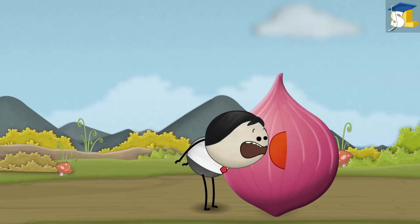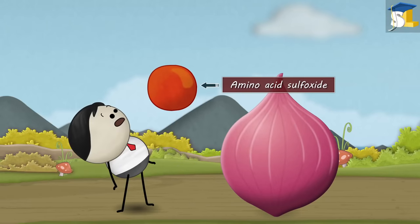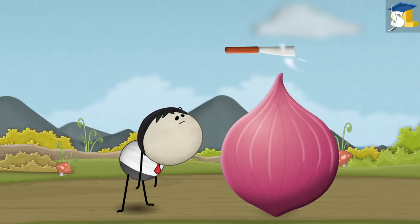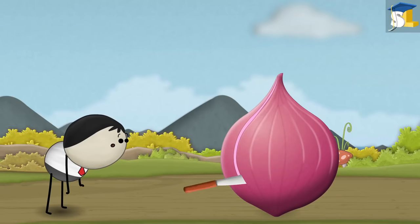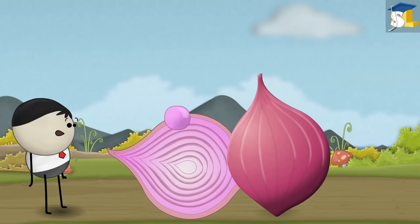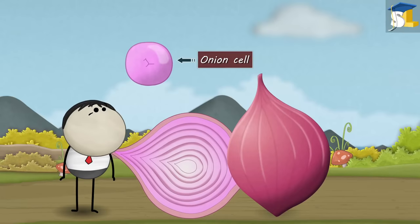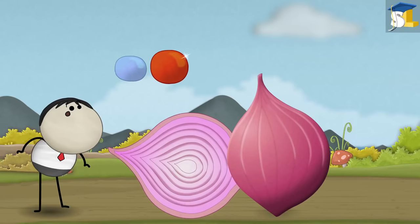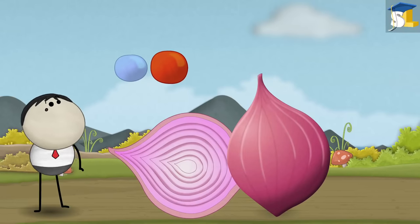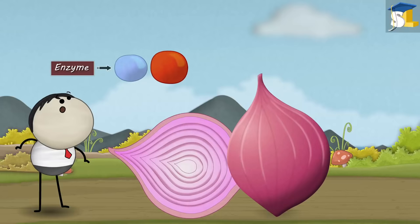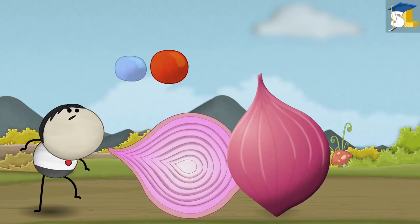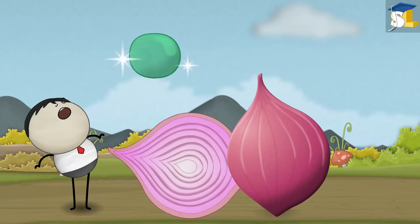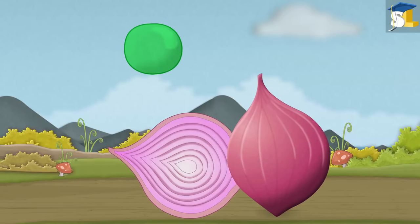Onions consist of amino acid sulfoxides. When we cut an onion, millions of onion cells rupture, releasing the amino acid sulfoxides along with some special enzymes. These special enzymes react with amino acid sulfoxides to form a chemical.